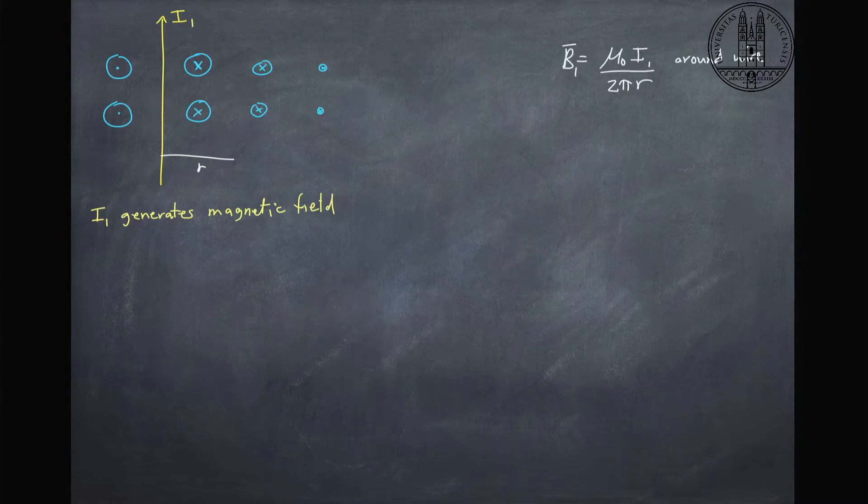In case you're interested, the formula for this: the magnetic field is related to the current divided by this distance r times some constants.